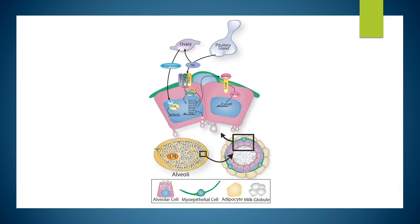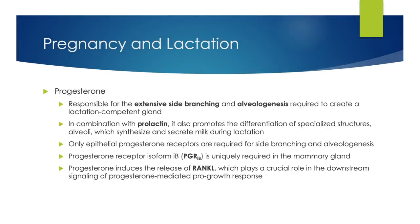By late pregnancy, the alveoli encompass the majority of the fat pad and show some secretory activity as pregnancy approaches term. Some of these changes also occur during menstrual cycles, with the gland exhibiting mild proliferation and differentiation including limited expansion of milk proteins, followed by involution. One of the main players of pregnancy and lactation is progesterone, which is responsible for the extensive side branching and alveologenesis required to create a lactation-competent gland. In combination with prolactin, progesterone also promotes the differentiation of alveoli, which synthesize and secrete milk during lactation. Only epithelial progesterone receptors are required for side branching and alveologenesis, and the progesterone receptor isoform IB is uniquely required in the mammary gland. Progesterone induces the release of RANKL, which plays a crucial role in the downstream pro-growth response.